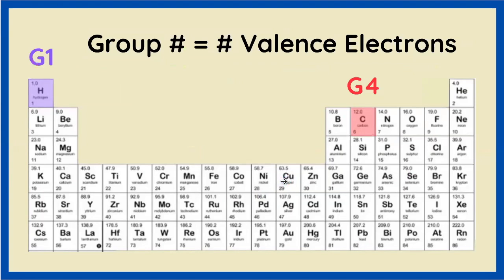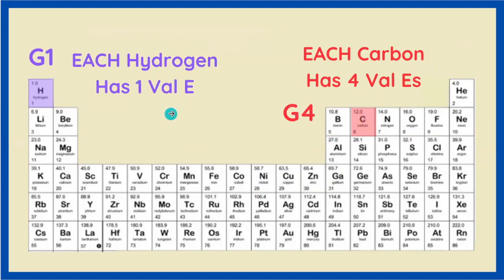And it just so happens that the group to which an element belongs tells us exactly how many valence electrons that element will have. Hydrogen is in group one, carbon is in group four. Therefore, each hydrogen atom has one valence electron, whereas carbon will have four valence electrons per atom.